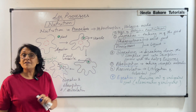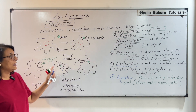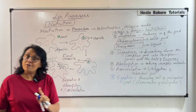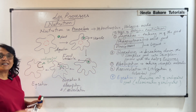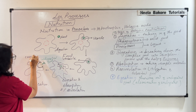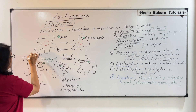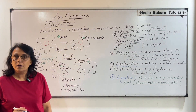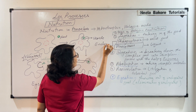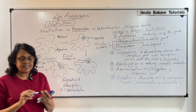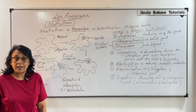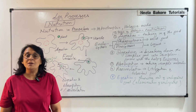Remember two terms: phagocytosis if solid food is taken in, and pinocytosis if liquid food is taken in. When undigested material is thrown out, that process is known as exocytosis. When something is taken inside the cell, it is endocytosis; when something is thrown out of the cell, it is exocytosis. This is how nutrition in amoeba is completed.